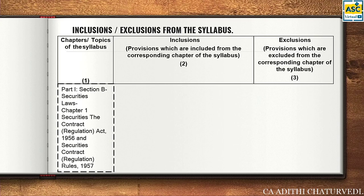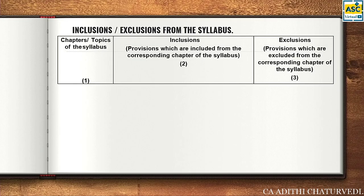Moving ahead to Section B — SCRA. Everybody knows the Securities Contracts Regulation Act has been removed from the syllabus. This notification came earlier; we sent it on Telegram to all students. Two chapters are not to be studied: one is SCRA, another is SFIO. SFIO will now form part of Economic Laws, which is the optional paper in the second group. Honestly I'm really sad about SCRA — it was such an important chapter with so much to learn — but the CA syllabus is being made easier.